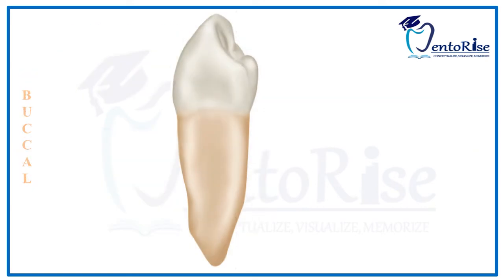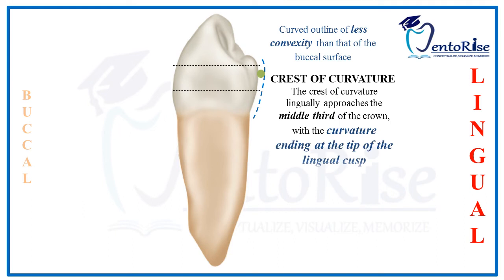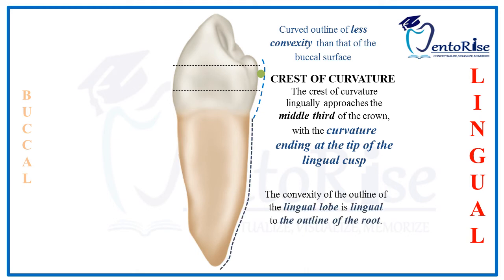Observing the lingual outline of the crown and the root: the lingual outline as observed from the tip of the lingual cusp down cervically is curved, but the convexity is less compared to that of the buccal surface. The crest of curvature lingually approaches the middle third of the crown. Moving apically, the convexity of the outline of the lingual lobe is placed lingual to the outline of the root.